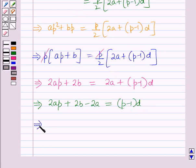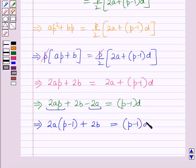Which implies from these two terms 2a is common and within brackets p minus 1 plus 2b equals p minus 1 the whole into d.